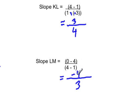3 over 4 and negative 4 over 3 are perpendicular lines, then we could say that KL is perpendicular to LM.